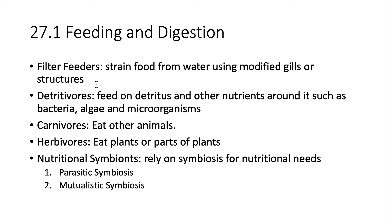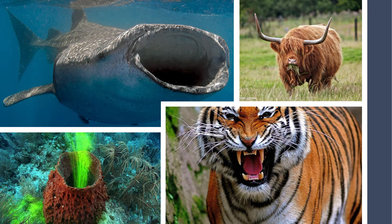Plankton are almost kind of microscopic shrimp-looking structures. You also have symbionts — they rely on symbiosis for nutritional needs, parasitic as well as mutualistic. A leech being a parasitic example, suckerfishes being a mutualistic symbiosis. We've covered these relationships before, so I'm not going to get into detail there.